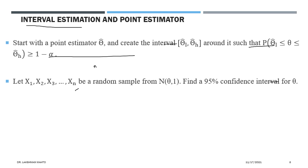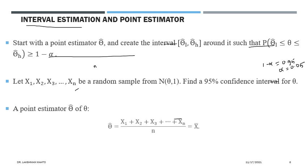Suppose we have a random sample of size n from a normal distribution with unknown parameter theta. The question is to find a 95% confidence interval for theta. Since n is not given, we apply large sample theory (n tending to infinity). The 95% confidence level means one minus alpha equals 0.95, so alpha equals 0.05.